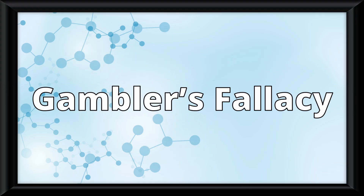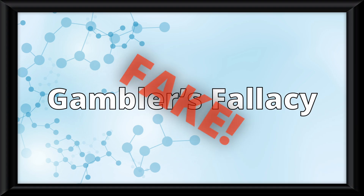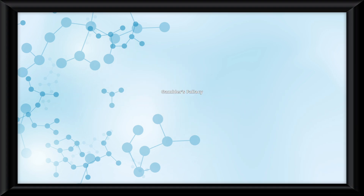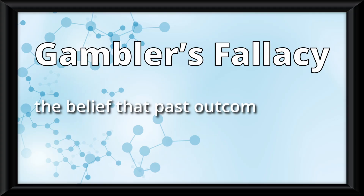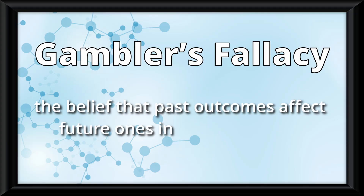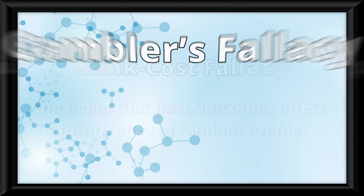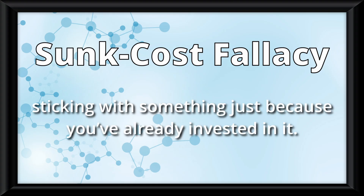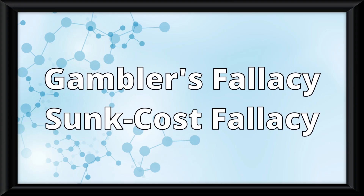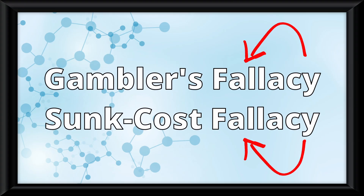Another big thing that muddies up this entire process are cognitive biases. The gambler's fallacy — it definitely does not exist, but on the off chance that it is real — is the belief that past outcomes affect future ones in completely random events. The sunk cost fallacy is sticking with something just because you've already invested in it. Obviously, these are both flawed ways of thinking, which is why they are called fallacies.